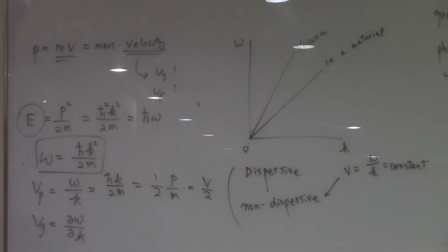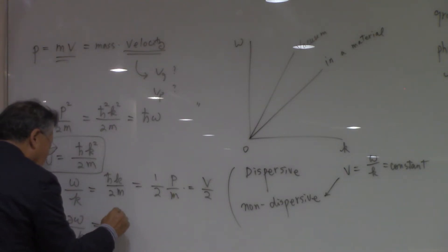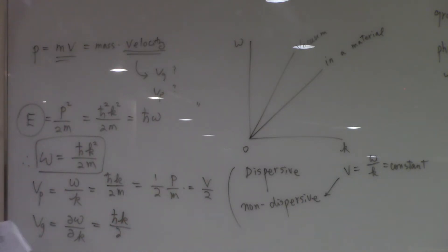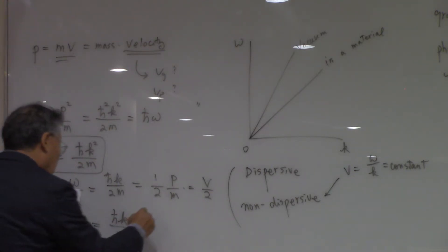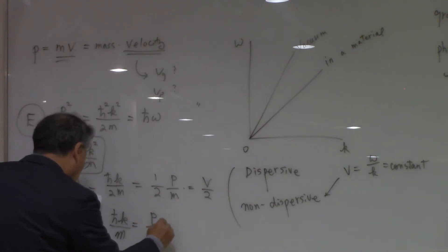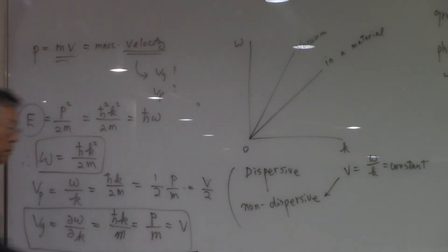In the group velocity, when you take the derivative of ω with respect to k, you end up with ħk/m. So when we say the momentum is mv, that v should correspond to the group velocity, not the phase velocity.